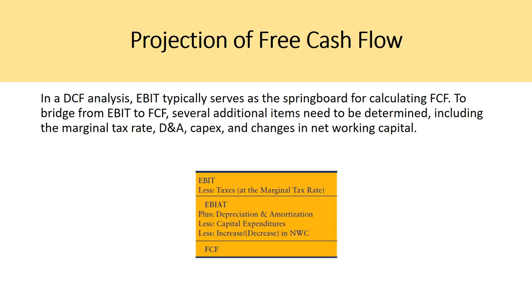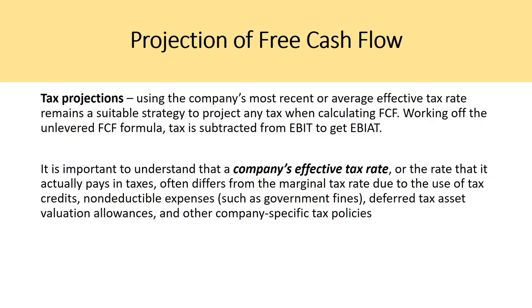In a DCF analysis, EBIT typically serves as the springboard for calculating free cash flow. To bridge from EBIT to free cash flow, several additional items need to be determined: the marginal tax rate, depreciation and amortization, CAPEX, and changes in net working capital. For tax projections, using the company's most recent or average effective tax rate is a suitable strategy. A company's effective tax rate often differs from the marginal tax rate due to the use of tax credits, non-deductible expenses, deferred tax asset valuation allowances, and other company-specific tax policies.